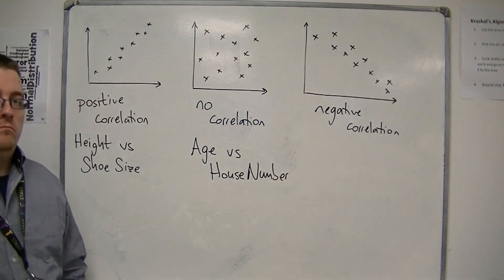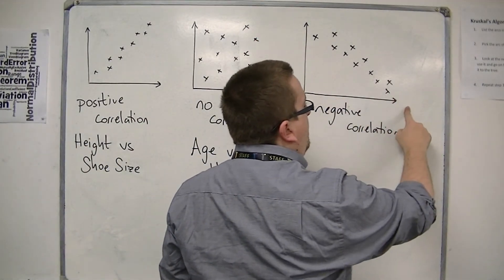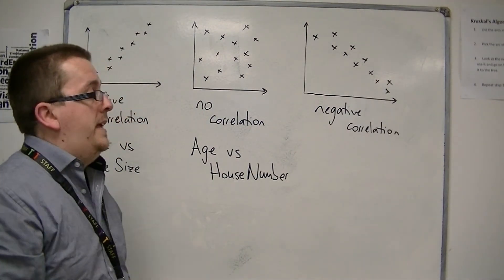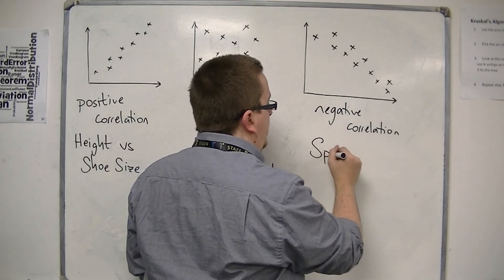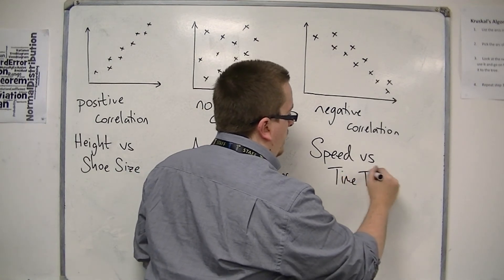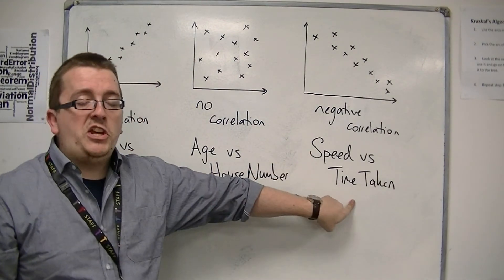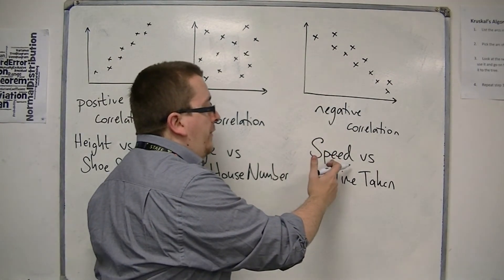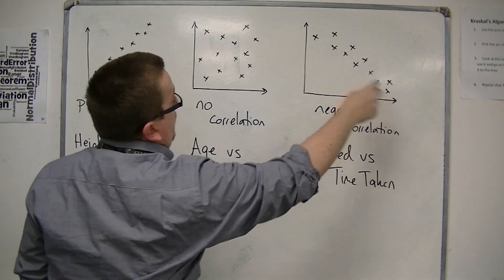Finally, with negative correlation, something that we would expect that the more that we have of one thing, the less we have of the other. One example would be something like speed versus the time it has taken to travel. The faster you go, the less time it has taken to get to your destination. As one increases, the other decreases, and then we would expect to plot them in that direction.